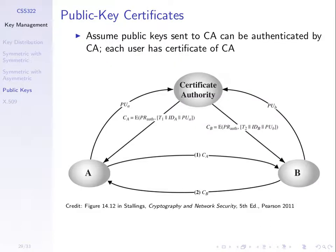This next approach is called public key certificates. The same objective: A and B want to learn each other's public key and be sure it is their public key, not someone else's. A similar approach uses a third party to confirm whose key it is. In the previous scheme it was called a public key authority; here, the more common name is a certificate authority. What happens is that A and B are issued certificates, denoted CA and CB. A certificate contains the public key of that entity signed by the authority.